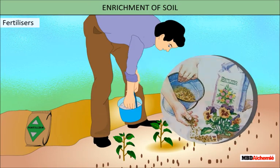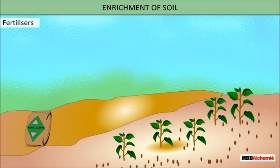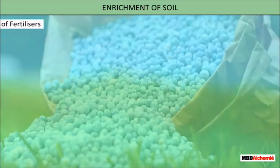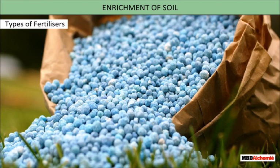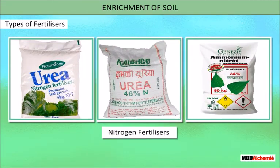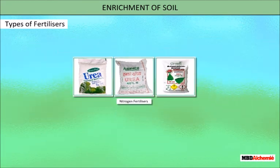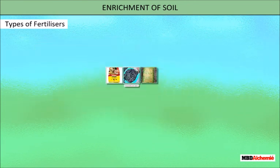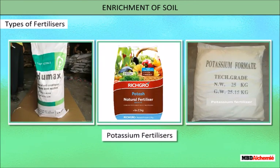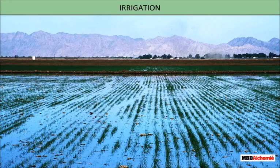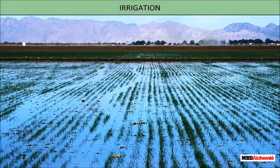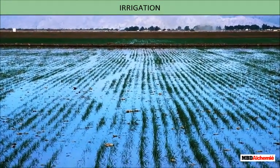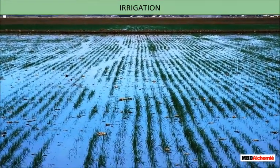Fertilizers are substances which improve the fertility of soil and help the plant to grow and synthesize more food. There are three main types of chemical fertilizers on the basis of availability of nutrients: nitrogen fertilizers, phosphate fertilizers, and potassium fertilizers.